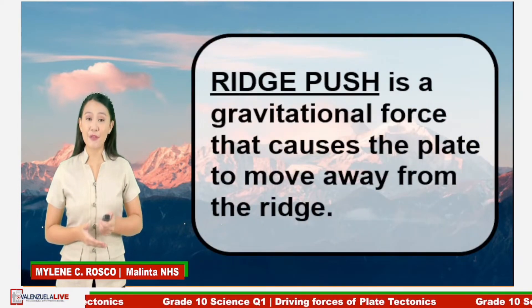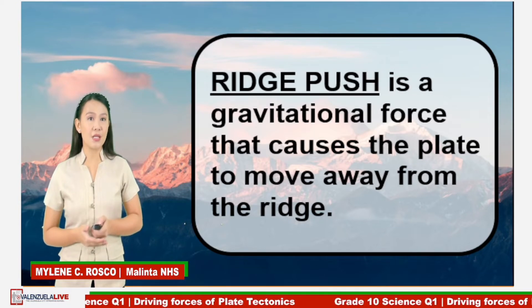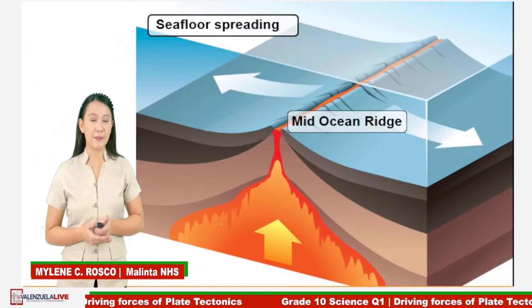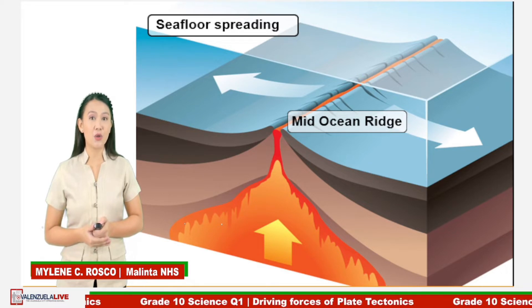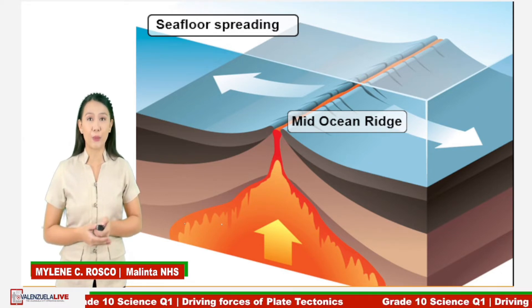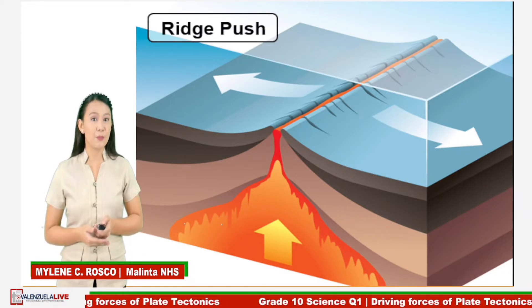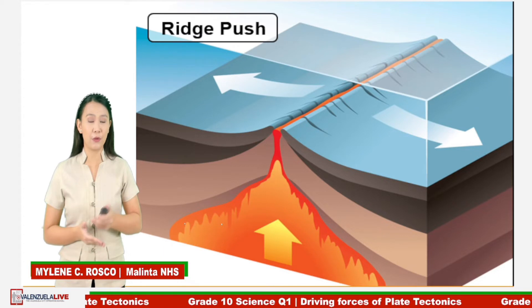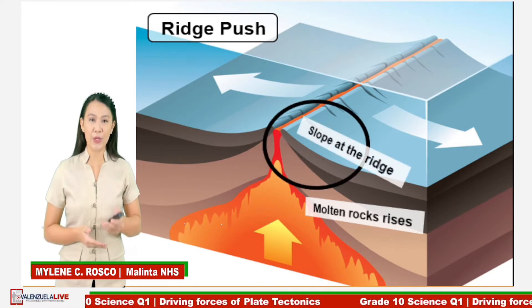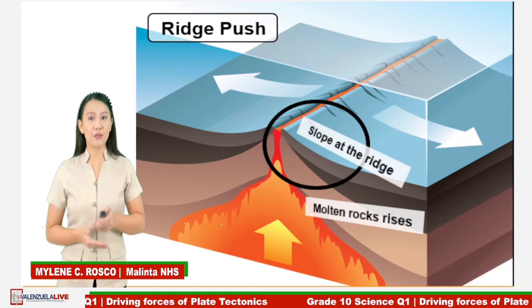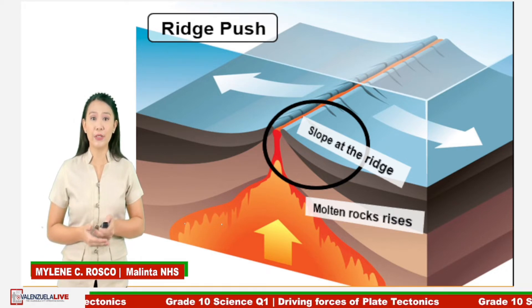Ridge push is a gravitational force that causes the plate to move away from the ridge. The mid-ocean ridge is the location of seafloor spreading, and it is where ridge push occurs. The molten magma that rises at the mid-ocean ridge is very hot and heats the rocks around it. As the rocks near the ridge are heated, they expand and become elevated above the seafloor. The lava that flows from the ridge is very hot at first; therefore, it is less dense compared with the rocks farther away from the ridge.